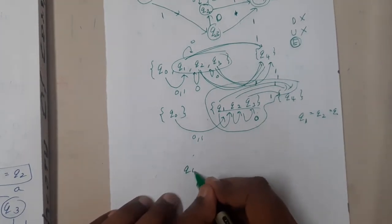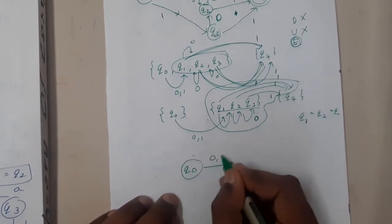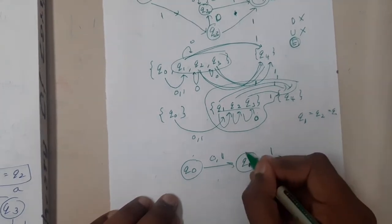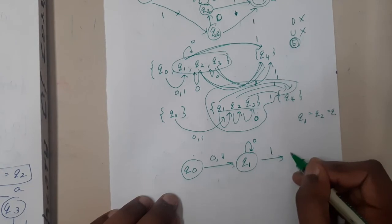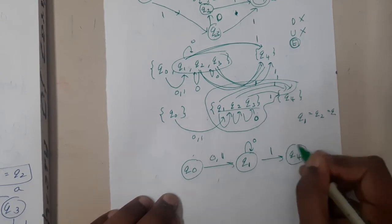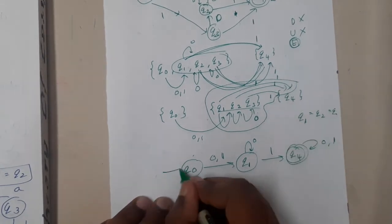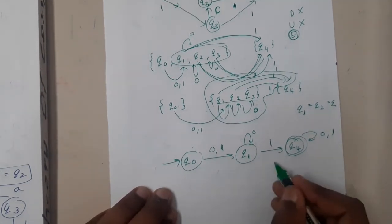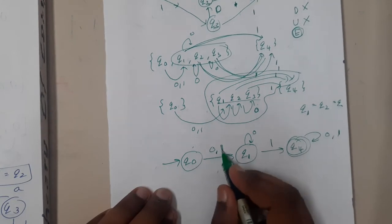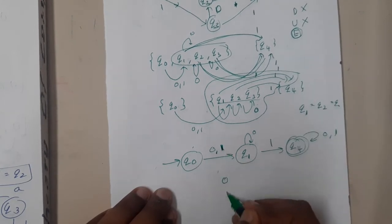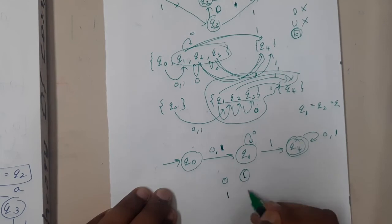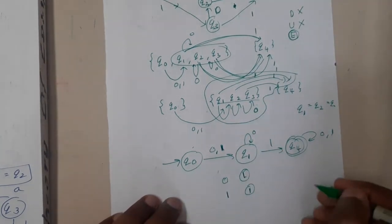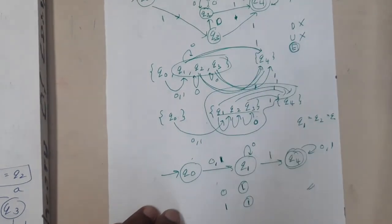So now converting to the minimized diagram: from q0 on '0' or '1' move to q1; from q1 on '0' it is a self loop, on '1' go to q4; q4 is the final state with a self loop on '0' and '1'. This minimized DFA represents strings where at least one '1' must appear — that one '1' is mandatory.